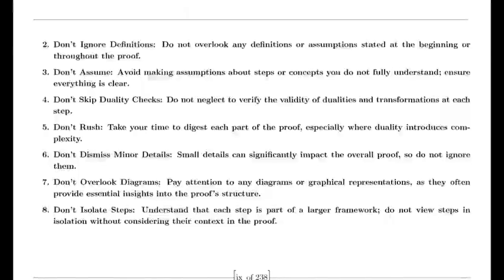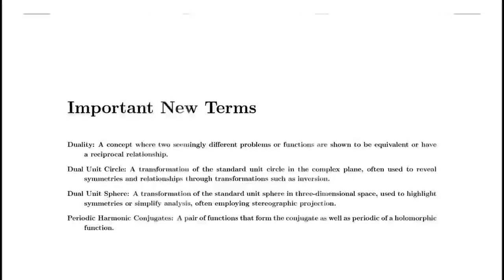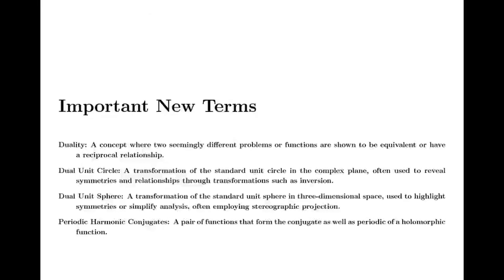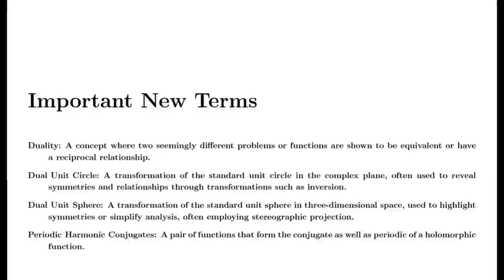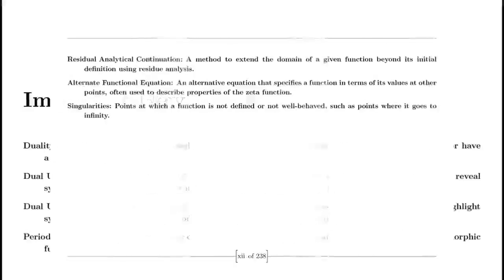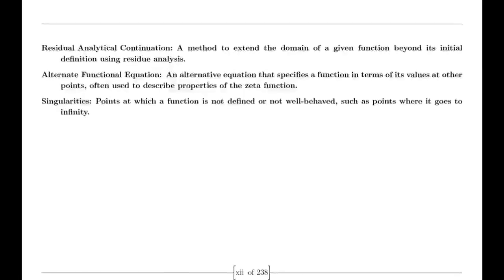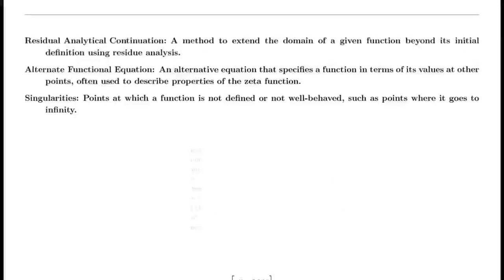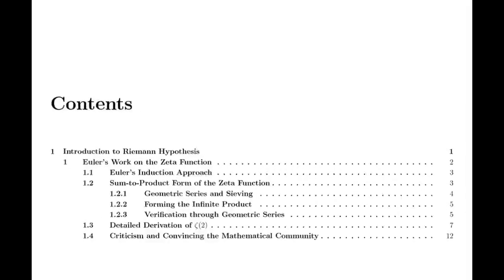Riemann's analytical machinery. Moving to the 19th century, we encounter Bernhard Riemann, who expanded our understanding of complex functions. Riemann introduced the concept of analytic continuation, which allowed for the extension of functions beyond their initial domains. He extended the Riemann zeta function — initially defined only for complex numbers with real parts greater than 1 — to the entire complex plane except for s equals 1, where it has a simple pole. This was a crucial advancement in complex analysis.